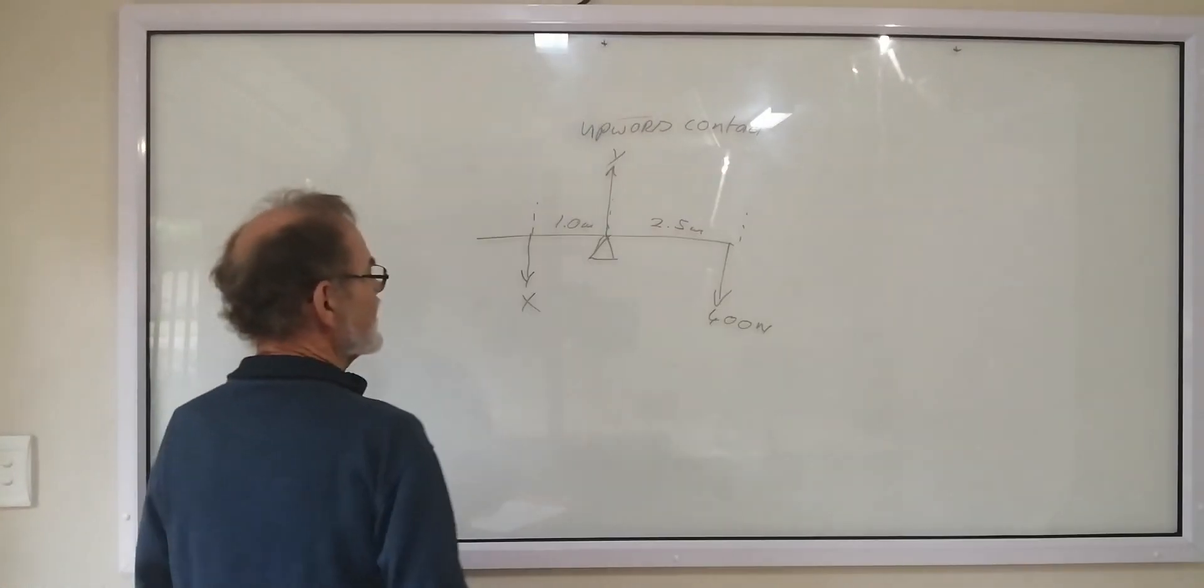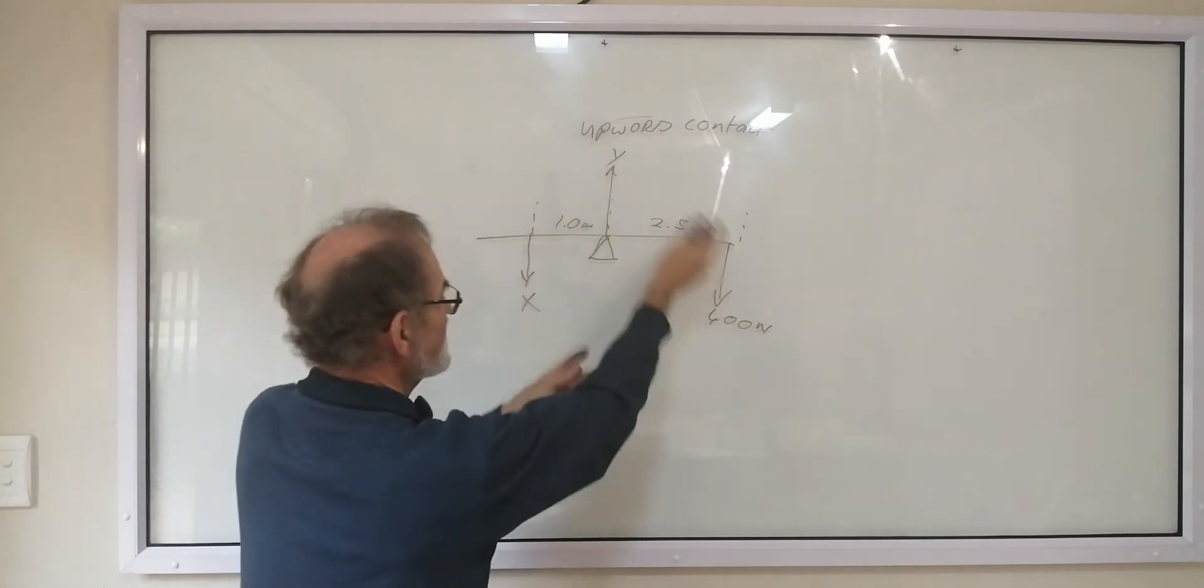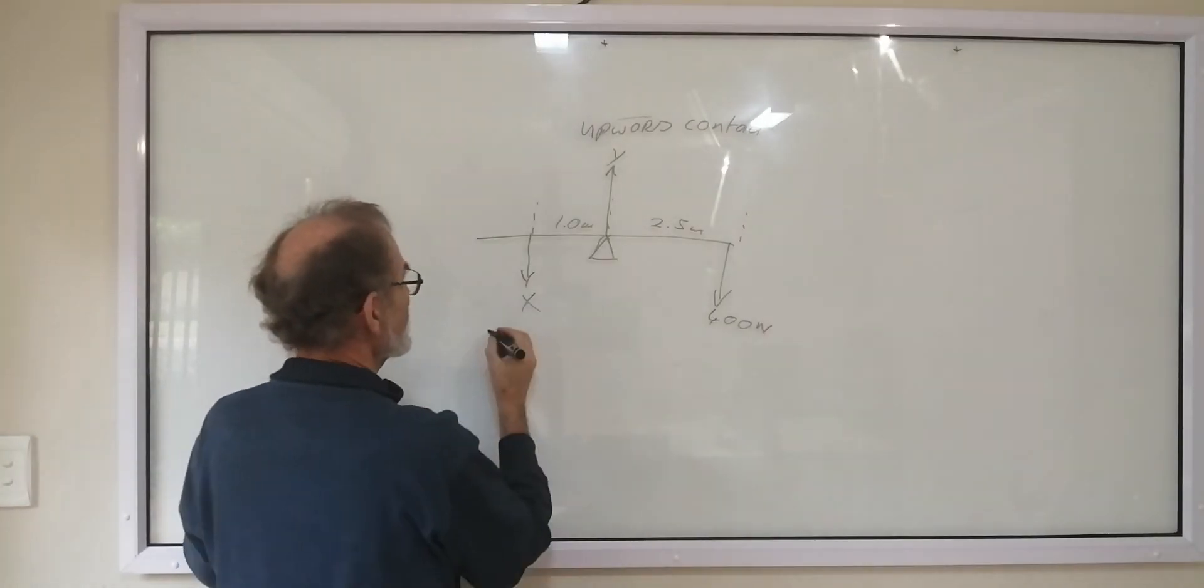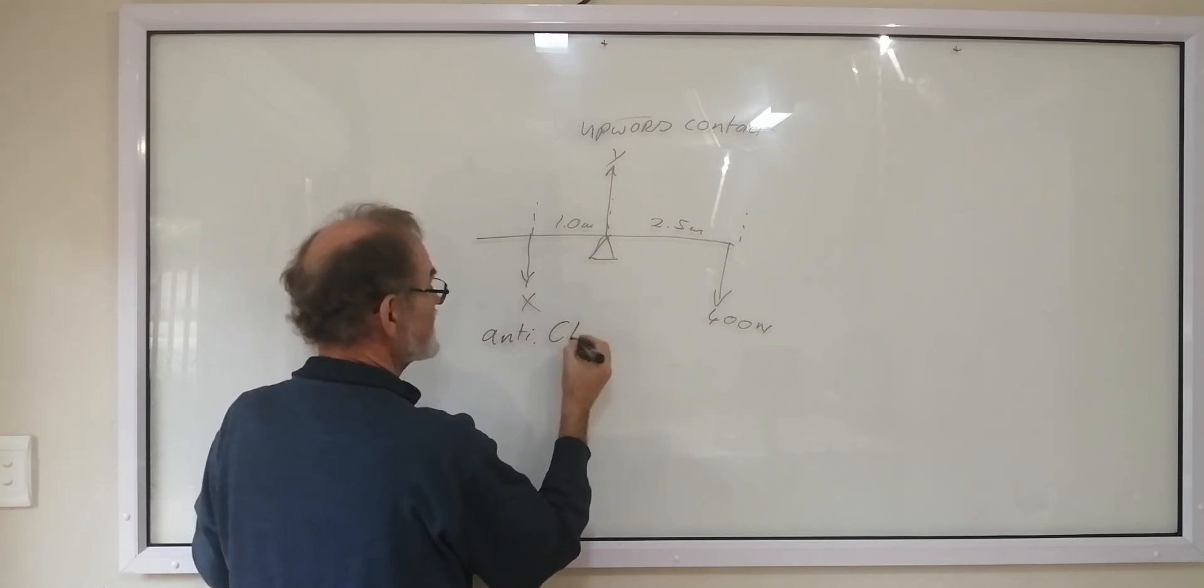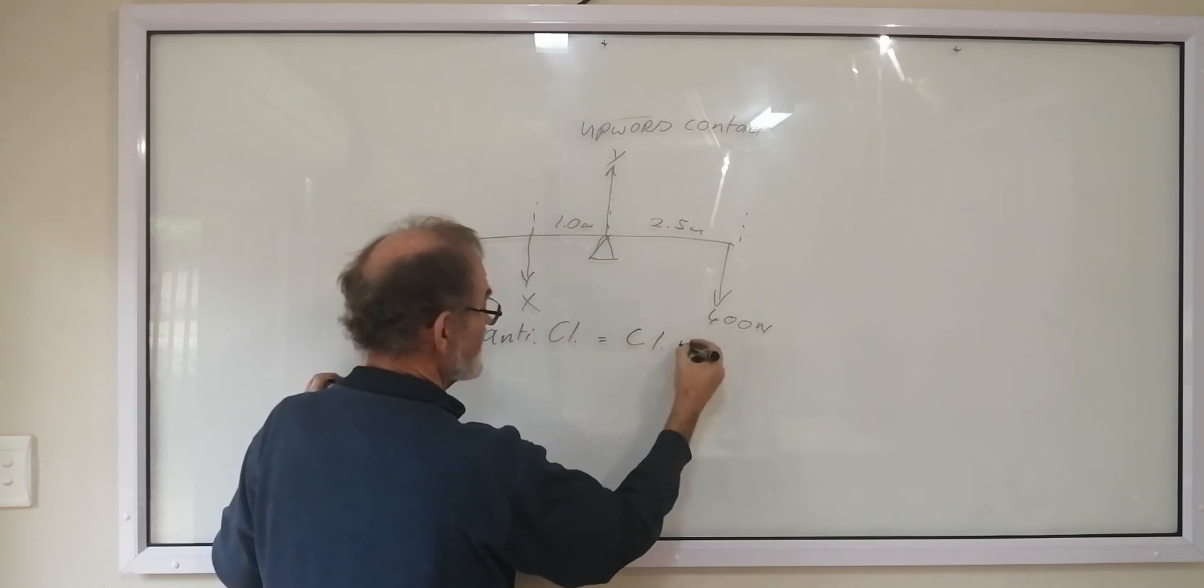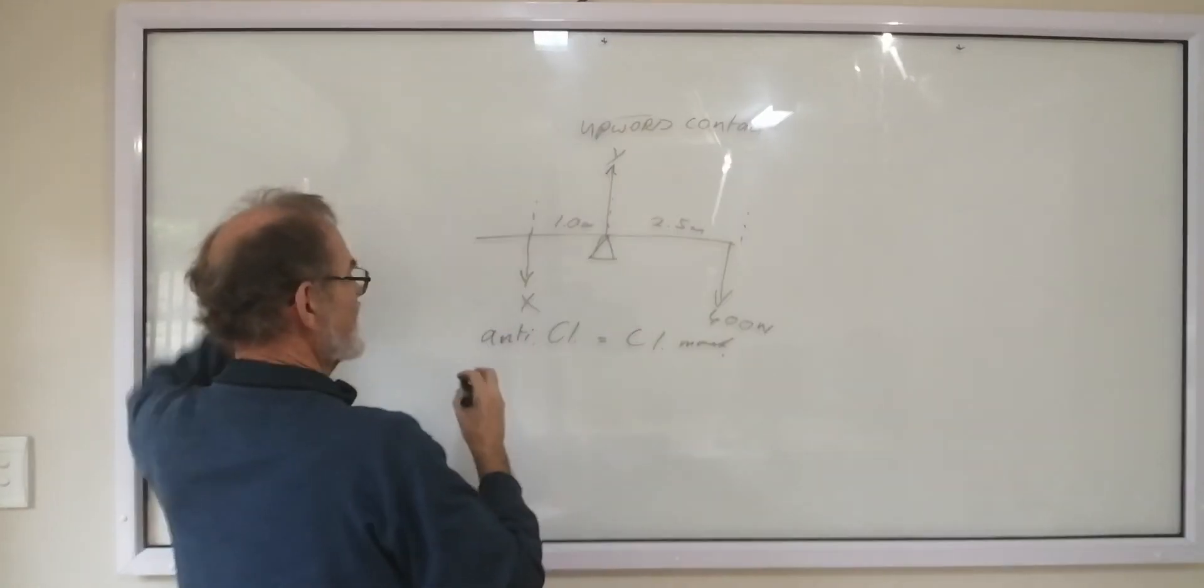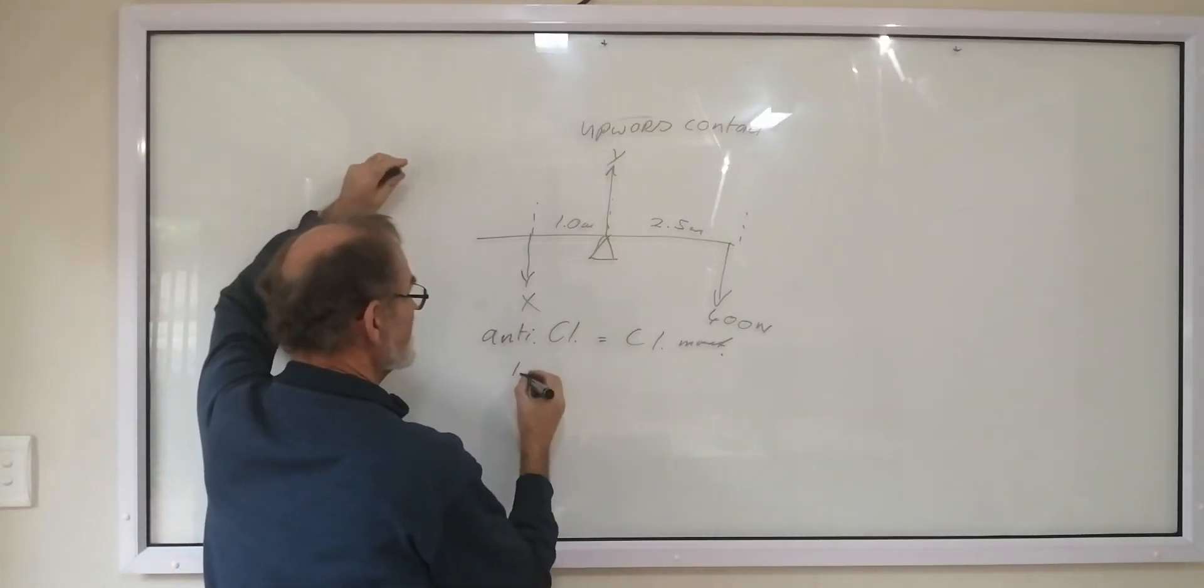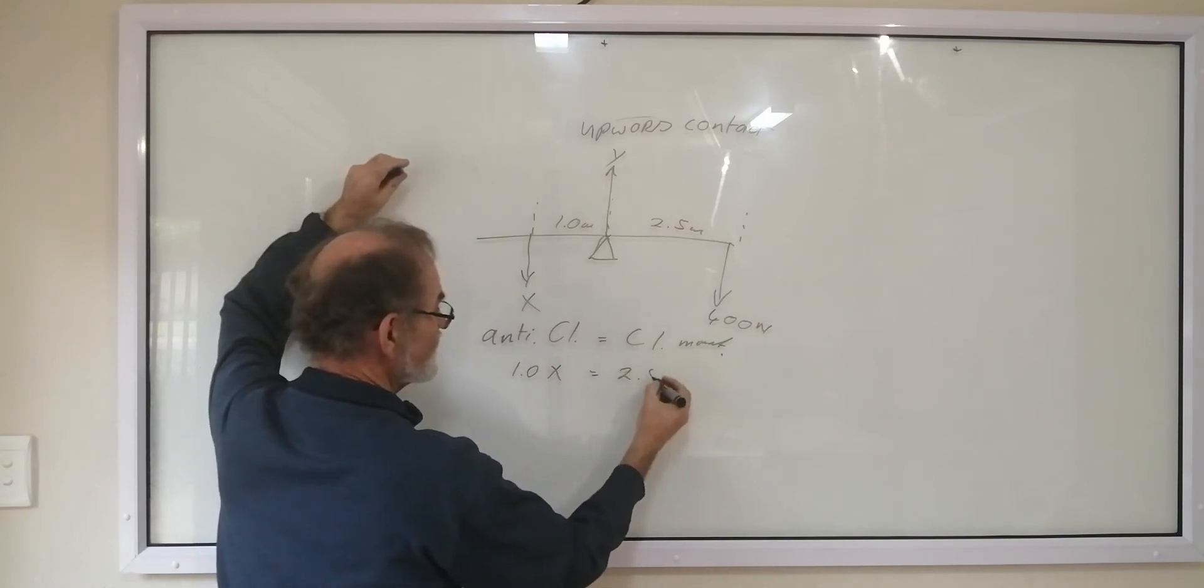So we've got the, this will be a clockwise moment, because it's going to, an anti-clockwise moment. So it's going to turn it that way. So the anti-clockwise is equal to the clockwise moment. The sum of, there's only one on each side.